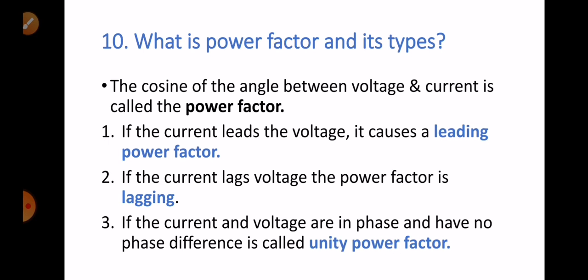Question number ten: what is power factor and its types? The cosine of the angle between voltage and current is called power factor. If the current leads the voltage, it causes a leading power factor. If the current lags behind the voltage, the power factor is called lagging power factor. If the current and voltage are in phase with no phase difference, it is called unity power factor.